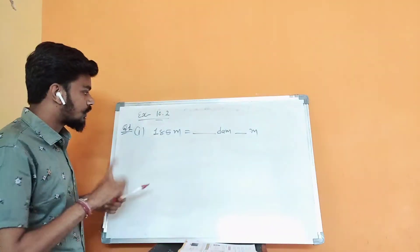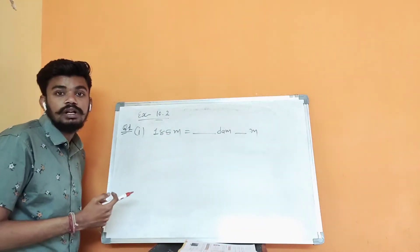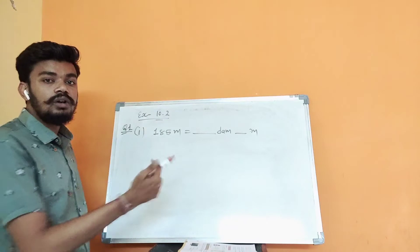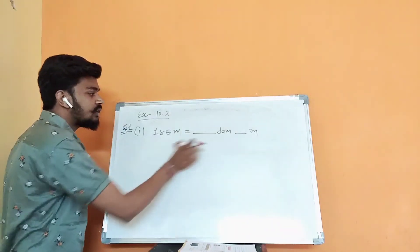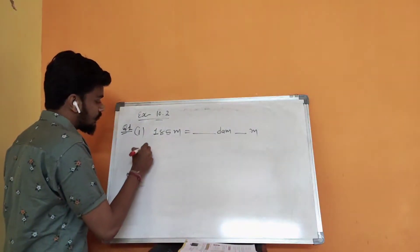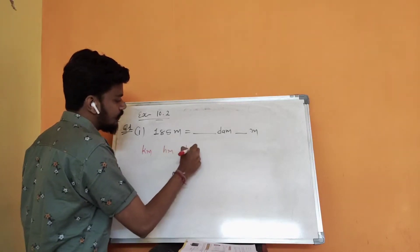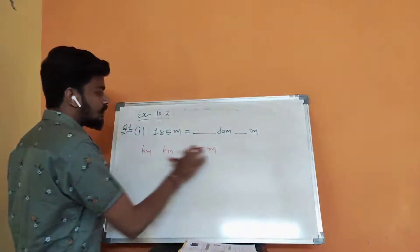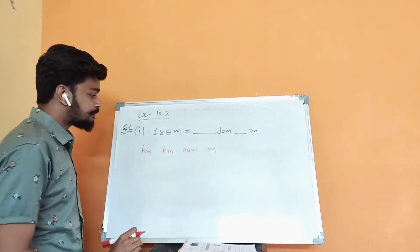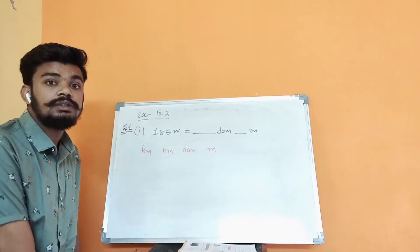First step for this kind of question: you have to identify which unit is given and which unit you have to convert to. Second step: for that conversion, you have to decide whether to multiply or divide. We can identify both things using the unit hierarchy: kilometer, hectometer, decameter, meter. The basic unit is meter, and decameter is bigger than meter.